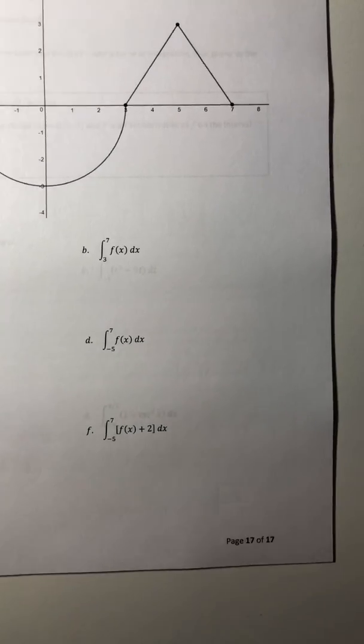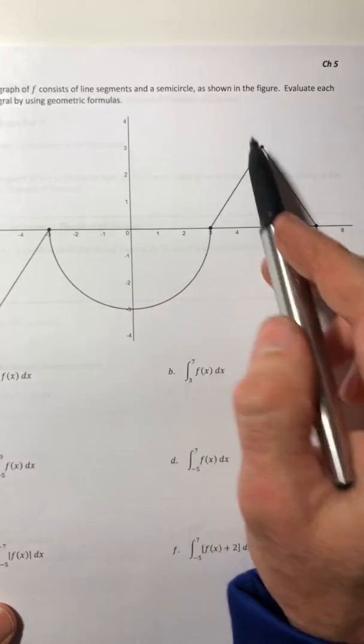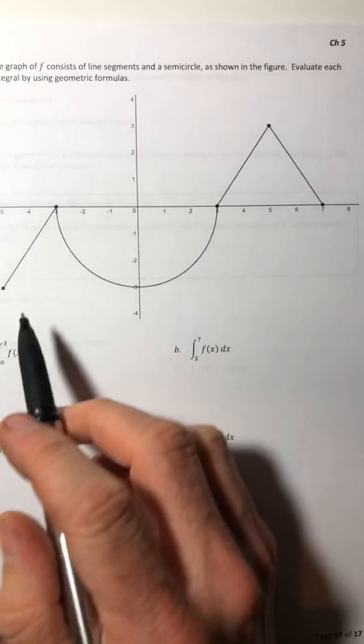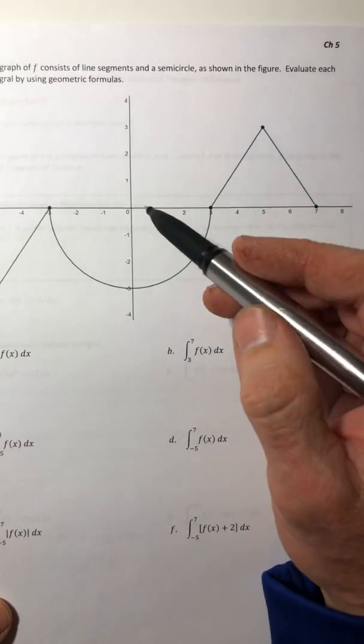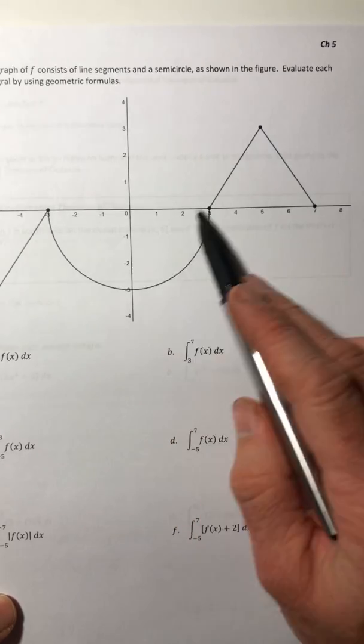Okay, so let's look at this last example. So the graph consists of line segments and a semicircle as shown and evaluate these. Alright, so from 0 to 3 of this. So 0 to 3. Now my curve is under here.